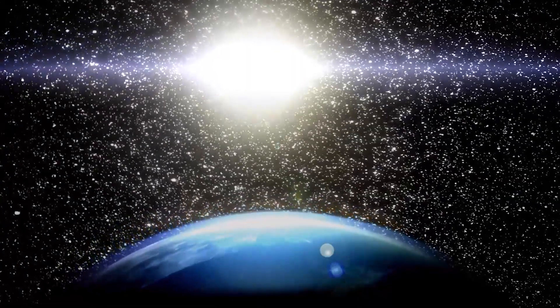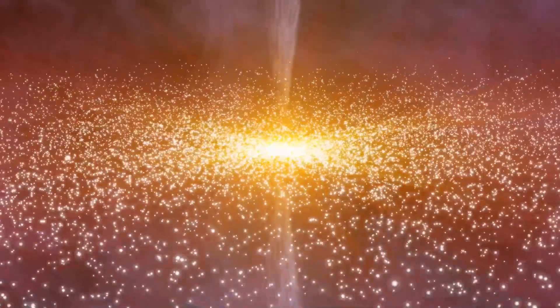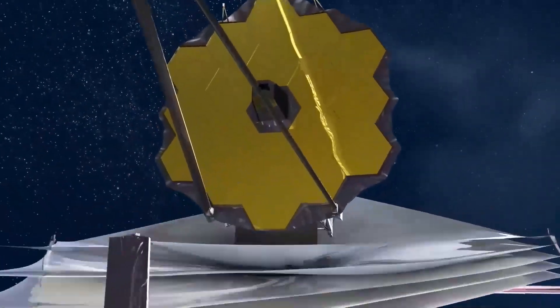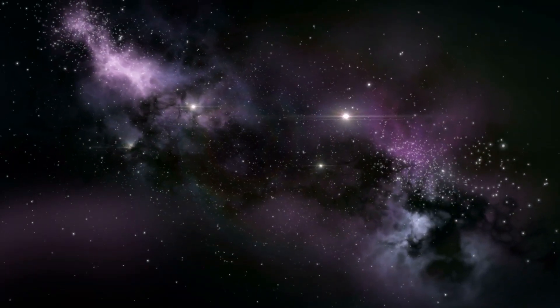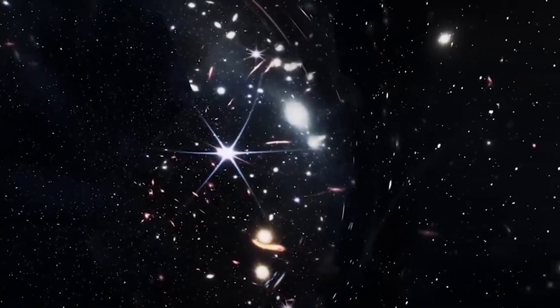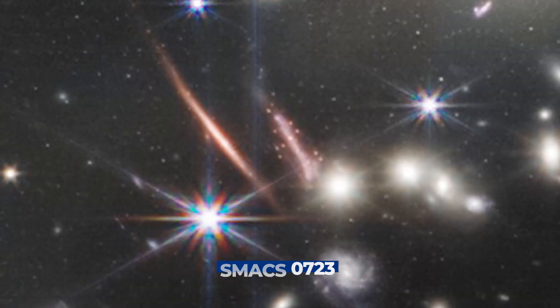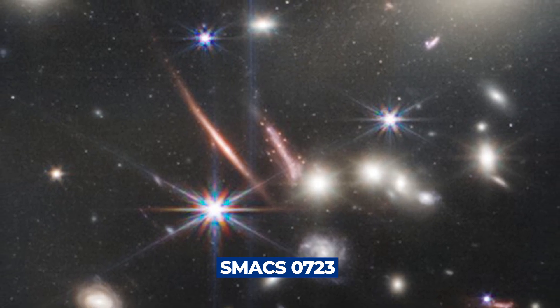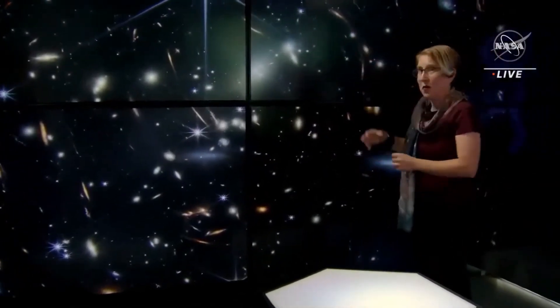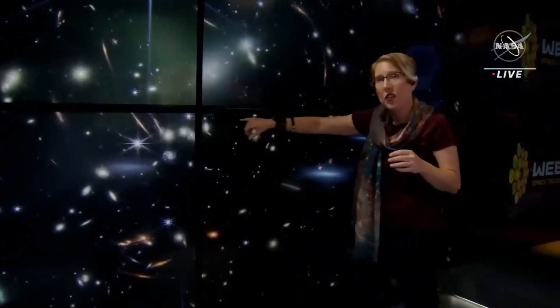The sparkler clusters could also settle a long-running debate about how globular clusters form. Powerful as the JWST is, most globular clusters at such a distance will be beyond its capacity. However, the sparkler galaxy lies behind the SMACS 0723 galaxy cluster, which creates an extreme gravitational lens not only magnifying the clusters 10 to 100 fold, but creating three images of the sparkler.